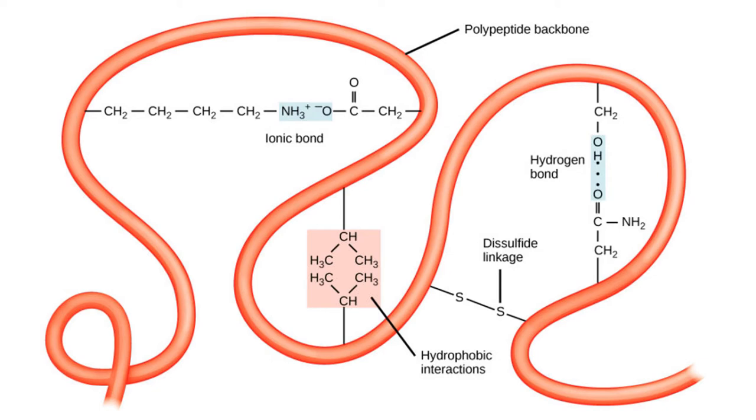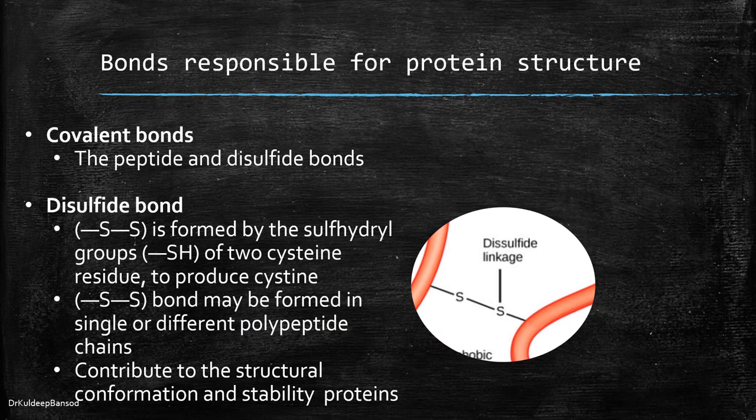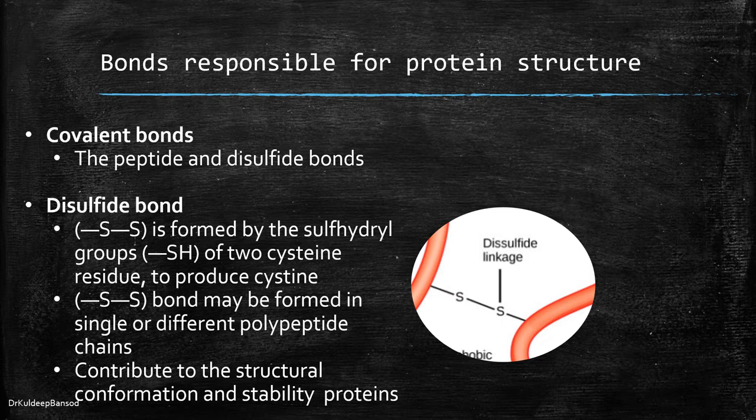Let's see the disulfide bonds. This bond is formed by the sulfhydryl groups of two cysteine residues to produce cystine. The disulfide bonds may be formed in a single polypeptide chain or between different polypeptide chains. These bonds contribute to the structural conformation and stability of proteins.